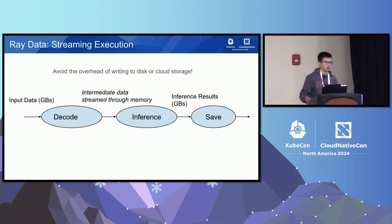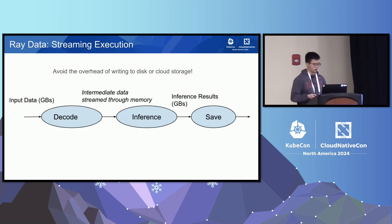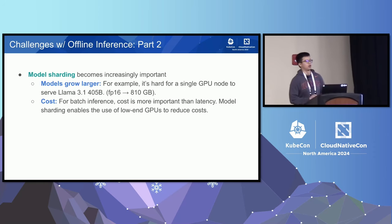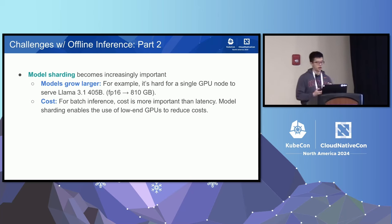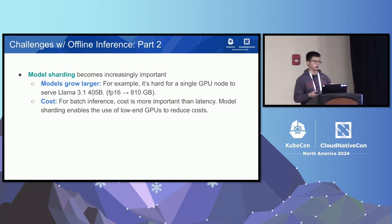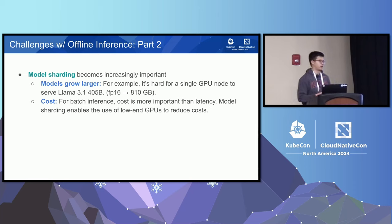Ray Data is the Ray community's batch inference solution. It provides streaming execution so you don't need to write intermediate results to disk or cloud storage, saving significant overhead. The second major challenge is model sharding, which is becoming increasingly important as models grow larger. For example, it's very hard for a single GPU node to serve a model like Llama 3.1 405B — using FP16, it still requires 800 gigabytes of GPU memory. For batch inference, cost is often more important than latency, and model sharding unlocks the opportunity to use lower-end GPUs to reduce cost.